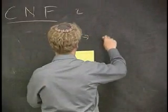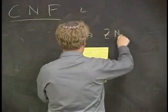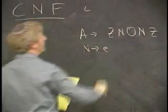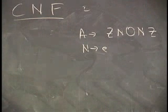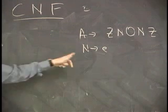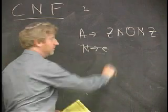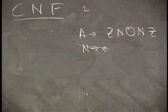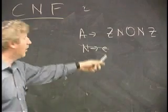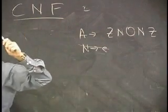Let's say we have a production like this. A goes to Z, N, O, N, Z. And another production like this, N goes to the empty string. Let's say these were the only productions in the grammar rule. We would like to get rid of N goes to the empty string. We would like to cross this out. But we don't want to lose any information that this production gives us. So what do we need to do not to lose any information and still be able to cross this out? What we're going to do is we're going to imagine that we went to every other production in the whole grammar where N appears.